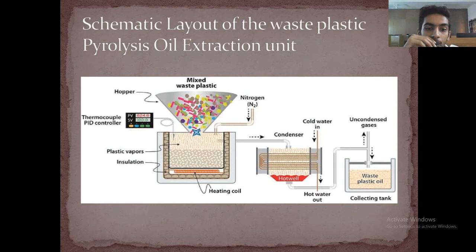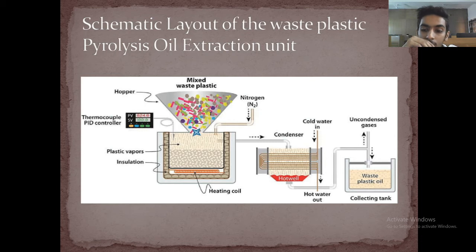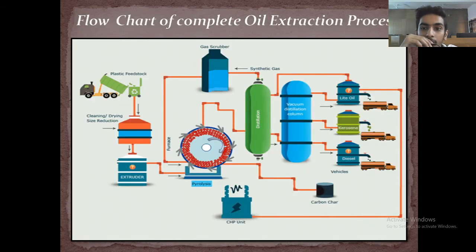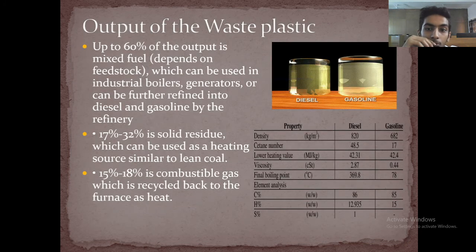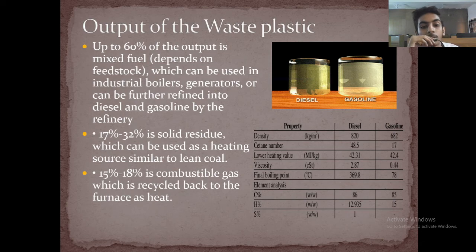As you can see, the entire layout of this plastic pyrolysis oil extraction unit goes from plastic vapors and insulation to a collecting tank. The complete oil extraction process is from waste plastic to light oil and kerosene, and we can also get diesel output from waste plastic. Up to 60% of the output is mixed fuel, 17% to 32% is solid char, and 15% to 18% is combustible gas.